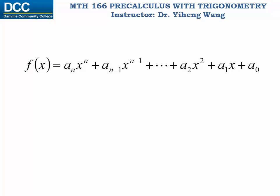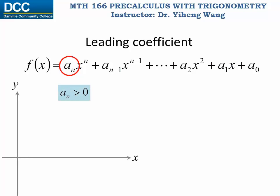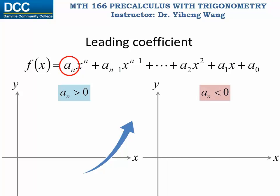That was a special case. If we have a polynomial function in its general form, the first step to sketch it is the leading coefficient test, where we look at the leading coefficient a_n. If a_n is positive, the right tail of the graph goes up. If the leading coefficient is negative, the right tail goes down.